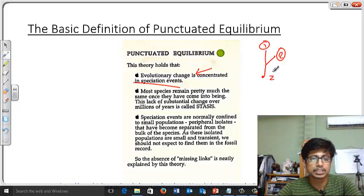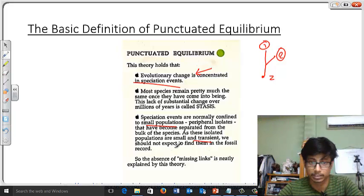Most species remain pretty much the same once they have come into being. And normally the speciation events are confined to smaller populations. As these isolated populations are small and transient, we should not expect to find them in the fossil record.